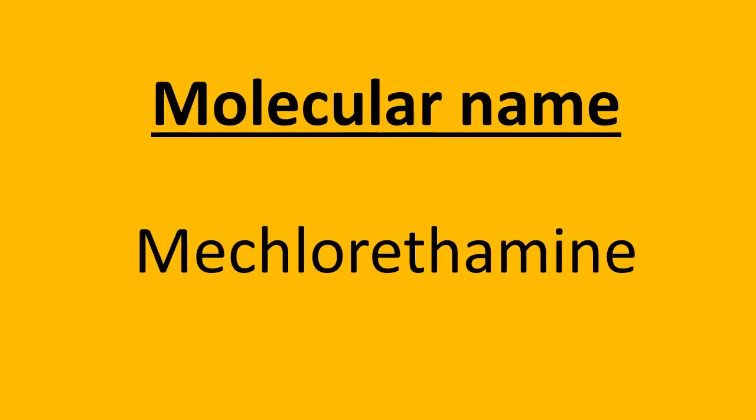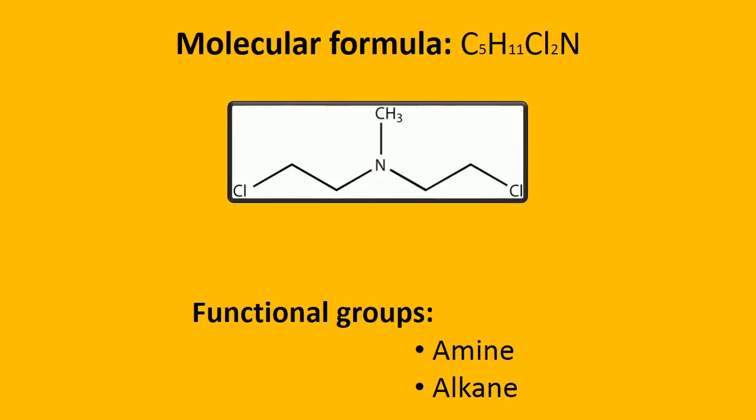The chemical name for nitrogen mustard is mechlorethamine. It contains 5 carbons, 11 hydrogens, 2 chlorines, and 1 nitrogen. It is an organic compound containing functional groups such as amine and alkyl halide.